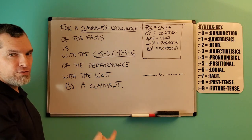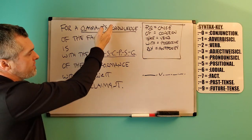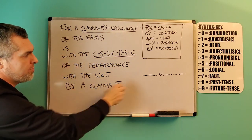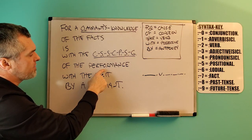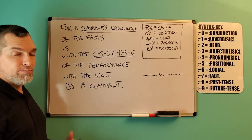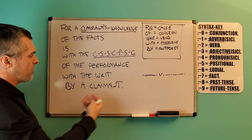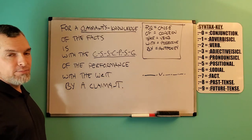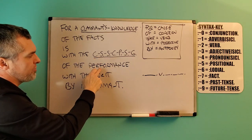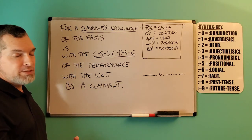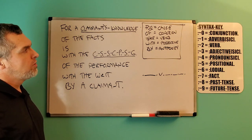Each positional has one function, no matter where it is. The 'for' is always the cause and always comes at the beginning. 'Of' is a concern — what is the cause concerned with? In this case, the facts. Then we have our verb of the thinking, our possessive, and then another 'of the' concerned. What is the performance concerned with? It's concerned with the correct sentence structure. And it works the same way backwards: 'For a claimant of the writ is with the performance of the correct sentence structure, with the facts by a claimant's knowledge.' One positional, one function, one congruency, in compliance with rule one — rule equal performances.